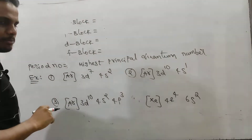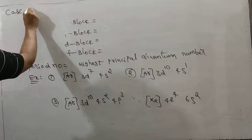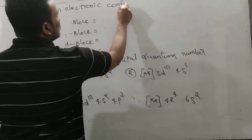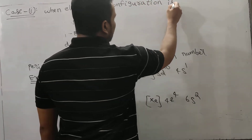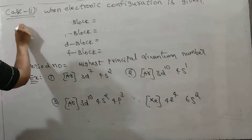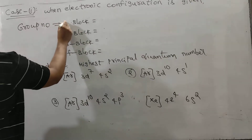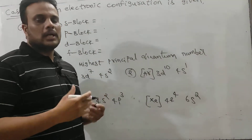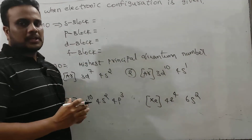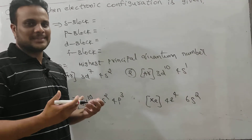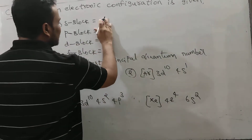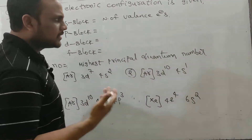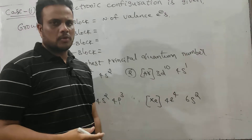How to calculate group number and period number? There are two cases. First, I am going to teach case one. Suppose we are given electronic configuration. When electronic configuration is given, then how to find out group number? To calculate group number, we can understand the nature of block — which block that element belongs to. When we are given the configuration of an S-block element, we know in S-block only two groups are there: group one and group two. How to calculate group number? It is simply the number of valence electrons. S-block elements have valence electronic configuration of NS1 or NS2, giving group number one or two.